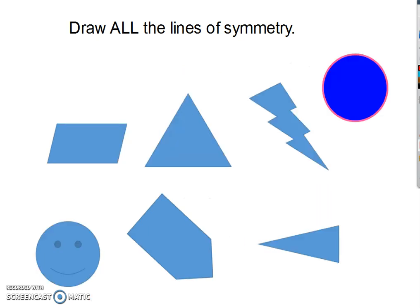Try a couple more. Parallelogram—you would think you would be able to draw a line across there. Does not work. This triangle has three equal sides, so that means it's going to have three lines of symmetry.